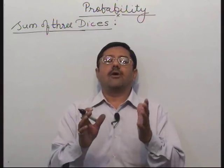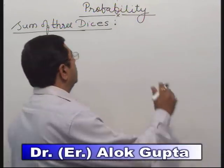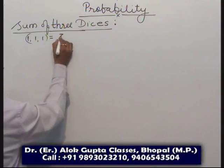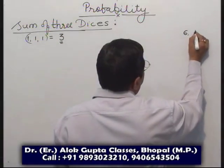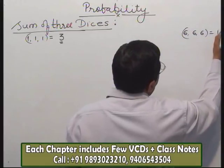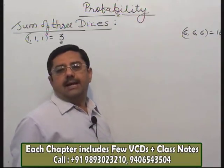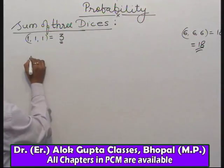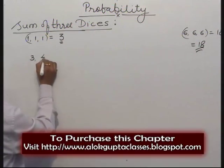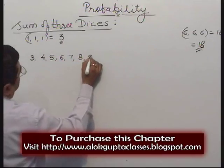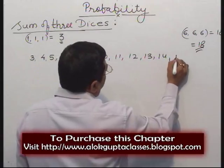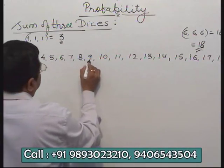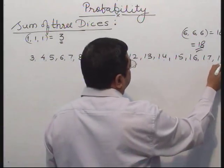Similarly, sum of 3 dice — most important. What is the minimum sum? 1, 1, 1 — the minimum sum with 3 dice will be 3. And maximum sum is 6, 6, 6, that is 18. Minimum is 3, maximum is 18. What is the probability? The sums go: 3, 4, 5, 6, 7, 8, 9, 10, 11, 12, 13, 14, 15, 16, 17, 18. That means there are 16 numbers. Half of 16 is 8.